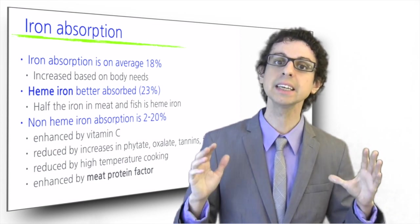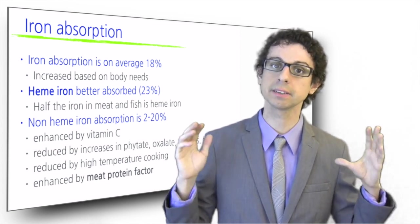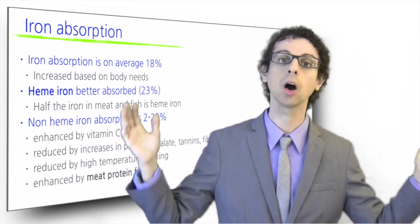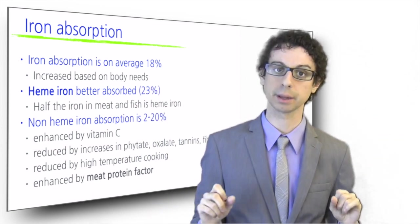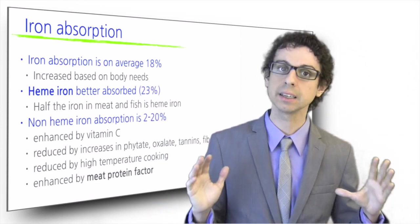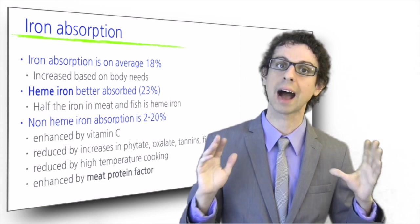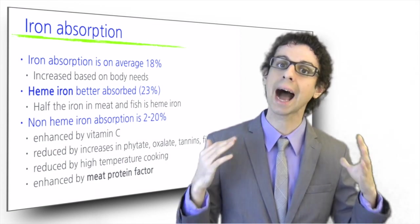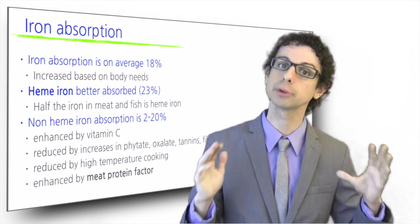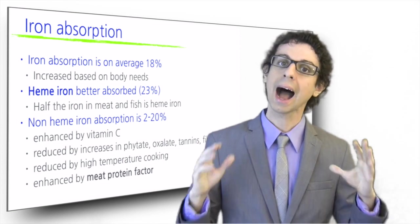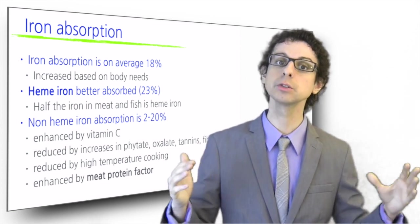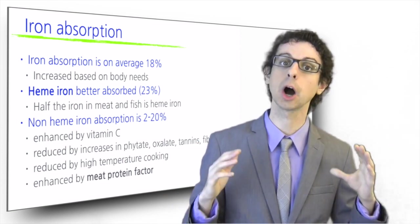In contrast, sudden increases in phytate, oxalate, fiber, tannins and zinc all decrease non-heme iron absorption. Black tea is one of the greatest enemies of iron absorption and people with higher iron requirements should not drink it with their meals. High temperature cooking also reduces iron bioavailability by oxidizing it.